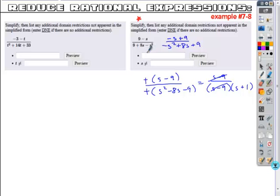I can cancel the common binomial factors. I'm left with 1 divided by the quantity s plus 1.